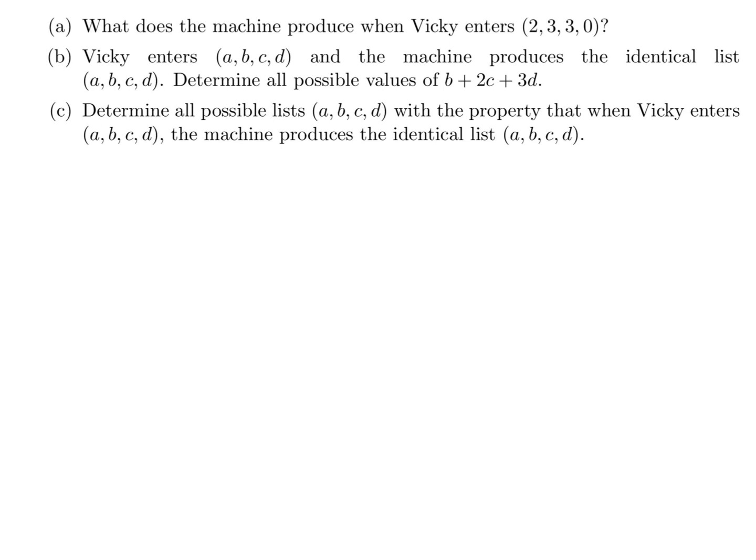Determine all possible lists A, B, C, D with the property that when Vicky enters A, B, C, D, the machine produces the identical list A, B, C, D. Okay. So, this is the part of the question where they actually want you to figure that number out. All right. So, A plus B plus C plus D is equal to 4. Always. We went through that in the previous question. And then, in this kind of scenario, we also showed that B plus 2C plus 3D is also equal to 4.